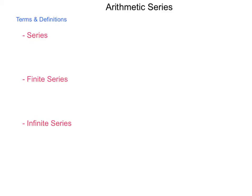Having looked at both major types of sequences, we are now turning our attention to series. The first will be the arithmetic series. So to begin this, we're going to look at some terms and definitions. First, a series is the sum of the terms of a sequence. If you can take a sequence of numbers and add all the terms together, then you have a series.